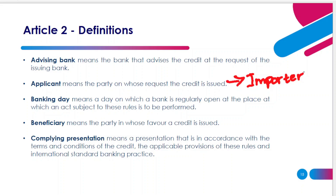Next, we have Beneficiary. The beneficiary is the ultimate entity or the endpoint of a letter of credit — it is in favor of this person that the entire letter of credit is being issued. Technically speaking, this is the exporter. So when discussing a letter of credit, the importer takes up the role of applicant and the exporter takes up the role of beneficiary.